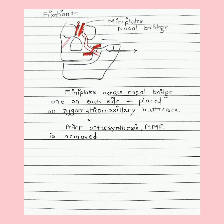Bone grafts are given after the surgery. The patient is given post-operative care: the patient is kept on steroids, cold compresses are used to reduce swelling, and post-operative imaging is performed to see the position of the segments. And that was all about Le Fort two osteotomy.